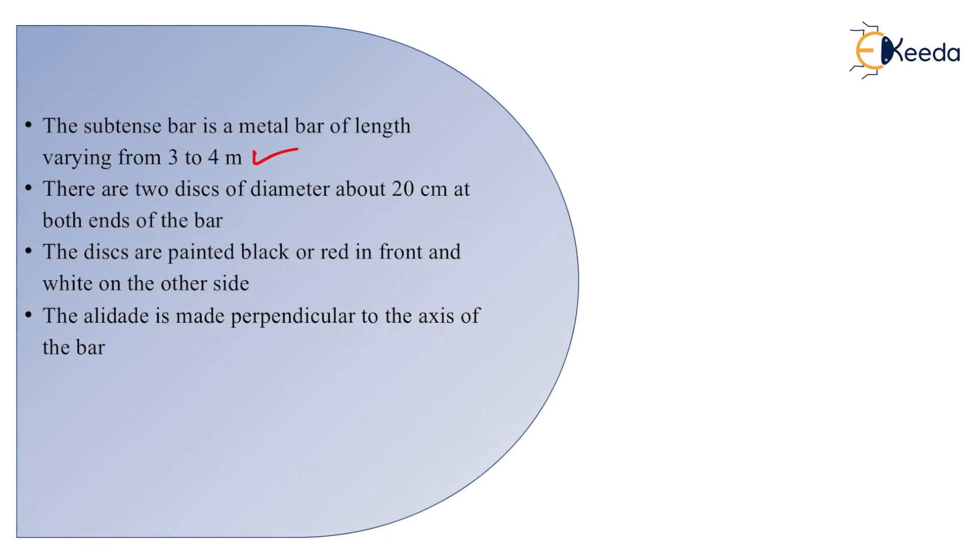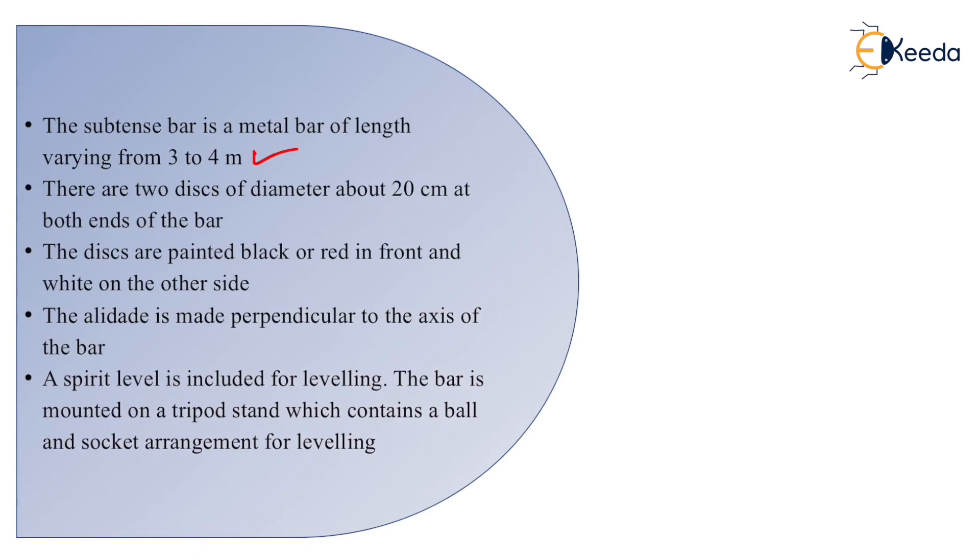The alidade is made perpendicular to the axis of the bar. The bar is truly horizontal to the ground. A spirit level is included for leveling. The bar is mounted on a tripod stand which contains a ball and socket arrangement for the leveling.